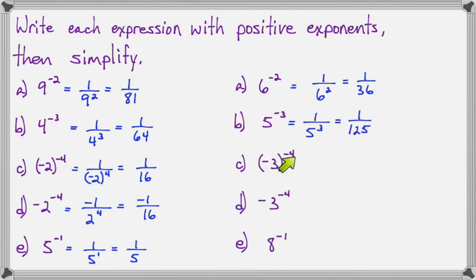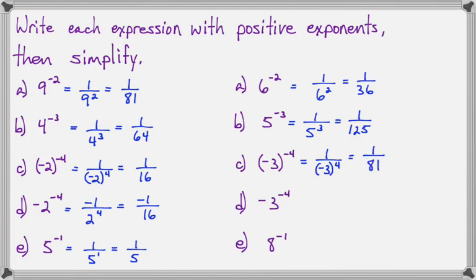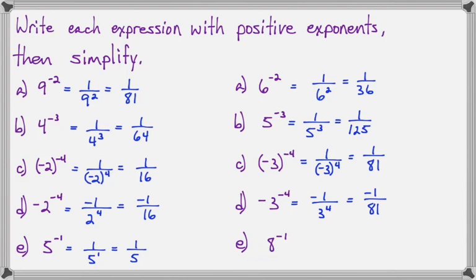With negative 3 to the negative 4, my base is negative 3, so I move the whole thing to the denominator, but the base retains its sign, and negative 3 to the 4th power becomes positive 81, so I have 1 over 81. On part D, negative 3 to the negative 4th — the negative 4 has a base of 3, the negative is separate, so the negative stays in the top, and 3 to the 4th moves to the bottom. Now 3 to the 4th is 81, so I have negative 1 over 81. And with 8 to the negative 1st, I have 1 over 8 to the 1st, which is simply 1 over 8.